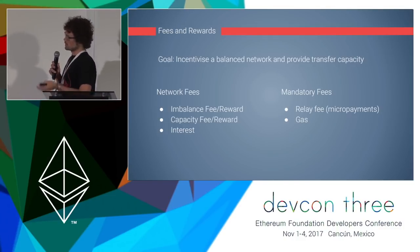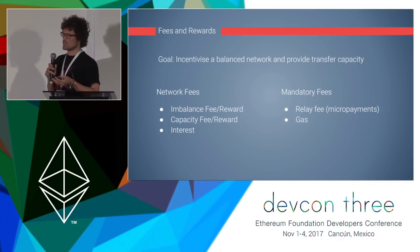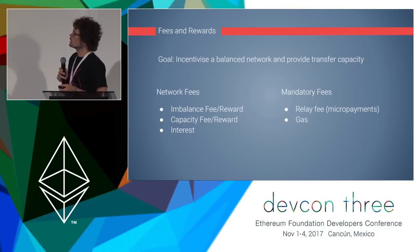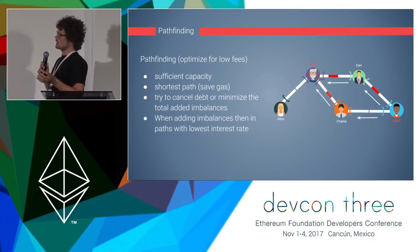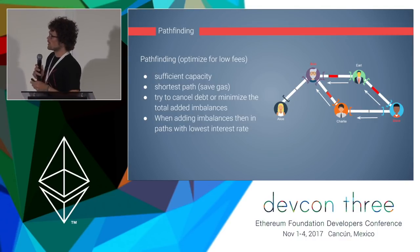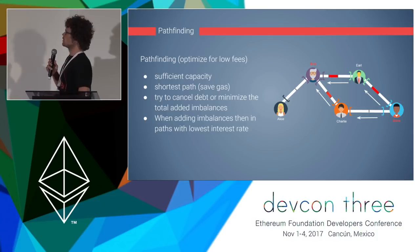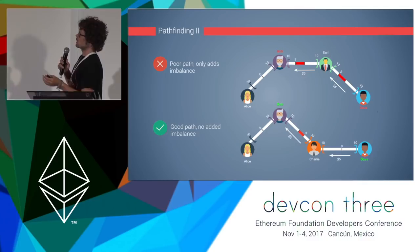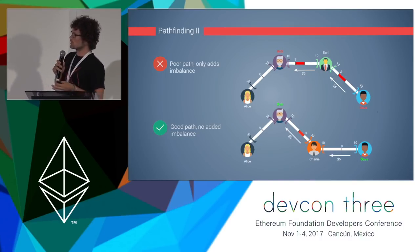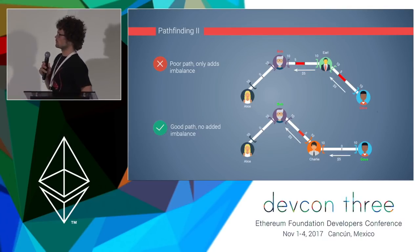There are also mandatory fees: gas fees for the Ethereum system, and relay server fees to incentivize third parties running dedicated relay servers. The pathfinding algorithm will look for sufficient capacity and shortest paths to save gas, and with the new fees it will also aim to minimize added imbalance or cancel out debt. For example, if Dave wants to pay Bob and there are two paths of equal length — one over Earl and one over Charlie — the lower path is better because it cancels out existing debt rather than increasing imbalances, so with fees applied it will be slightly cheaper and Dave will choose it.